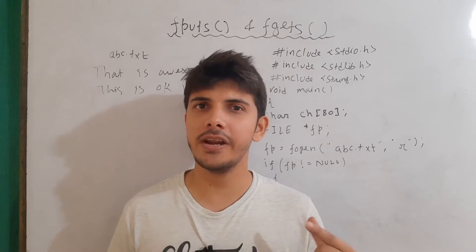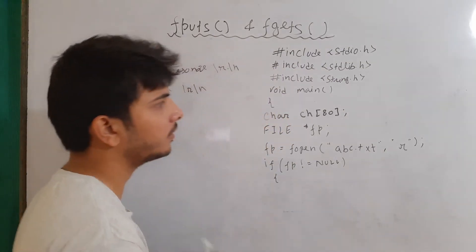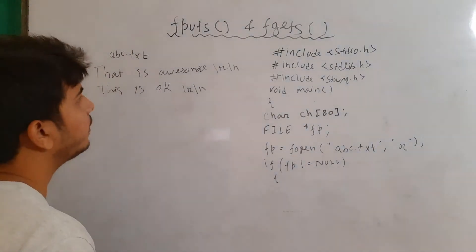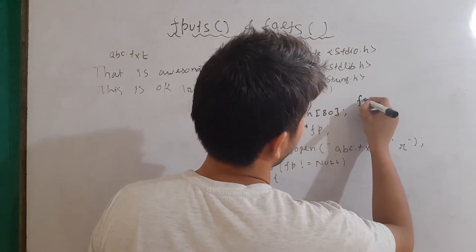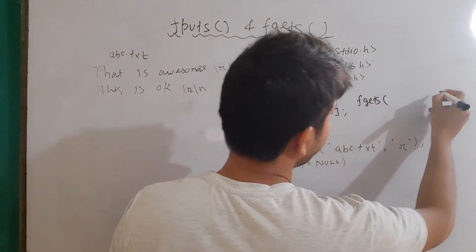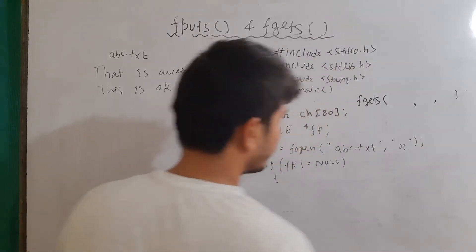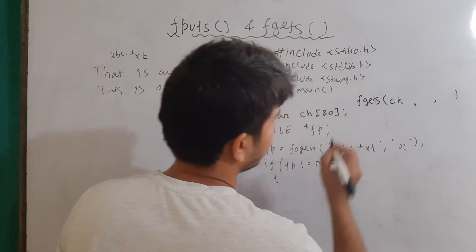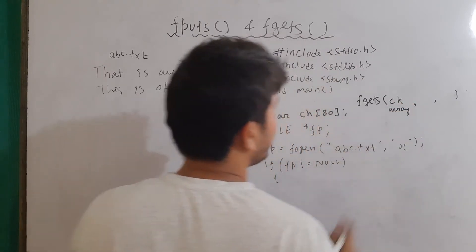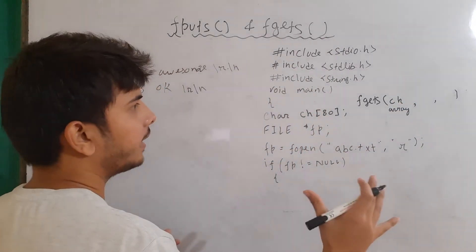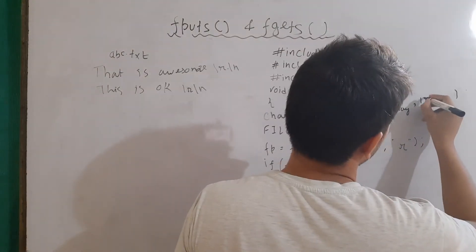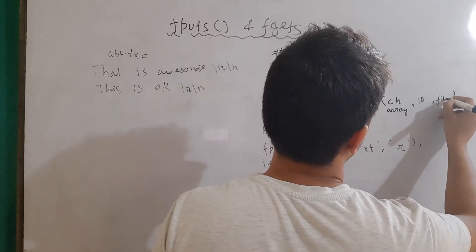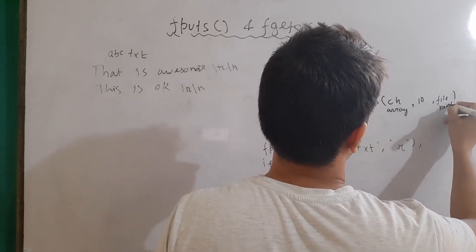Now let's talk about the fgets method to read a string from a file. Note that previously when we were writing strings using gets, we need to include the string.h header file. The fgets method takes three arguments: first, a character array; second, how many characters you want to read; and third, the file pointer for reading.